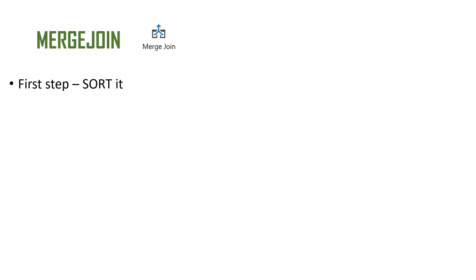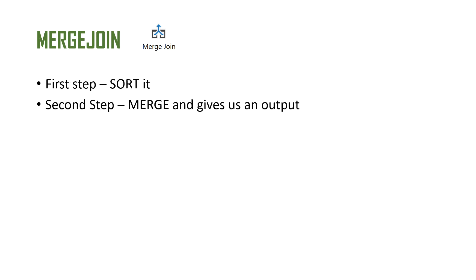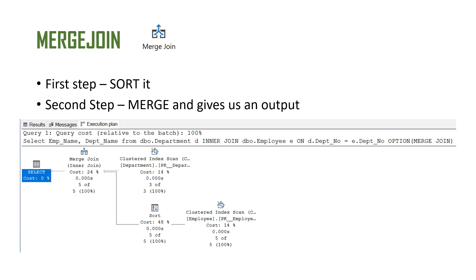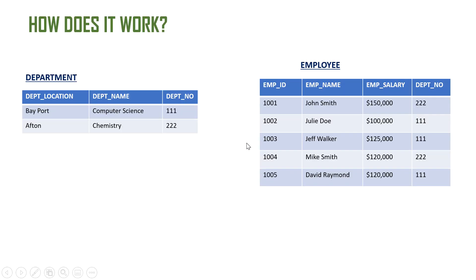Let's take a look at how merge join works. Firstly, it sorts the data, then it merges the data, and then gives us an output. Here is an execution plan which shows the data being sorted and then the merge join being applied. We'll take a look at it with an example.